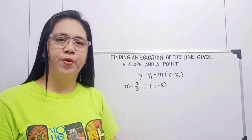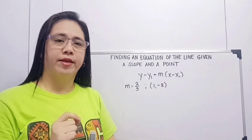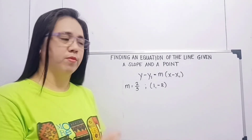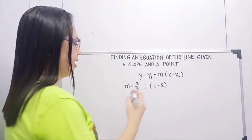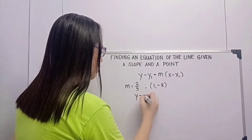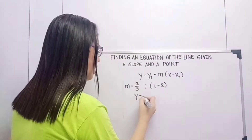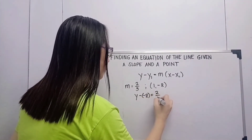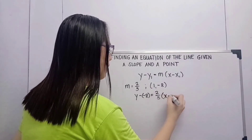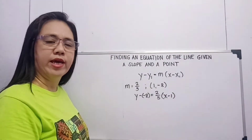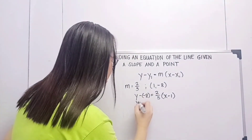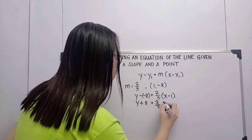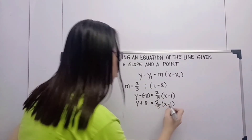This is our third example — it's a bit more challenging, but we'll make it easy, because the slope is a fraction. So let's set it up: y minus y sub 1, where y sub 1 is negative 8, is equal to 2/5 times x minus 1. So we've substituted the values. This gives us y plus 8 is equal to 2/5 times x minus 1.